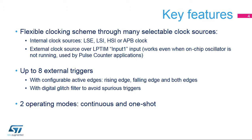The low-power timer features up to eight external trigger sources with configurable polarity. External trigger inputs feature digital filters to cancel out faulty triggers that could be raised in noisy operating environments. The low-power timer can be configured to run either in continuous or one-shot mode. One-shot mode is used for generating pulse waveforms, while continuous mode is used to generate PWM waveforms.